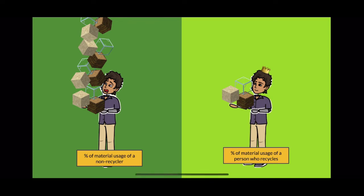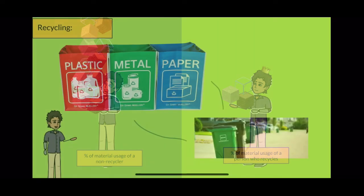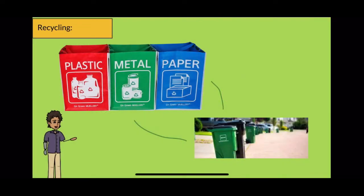When we recycle, we are reducing the amount of raw materials we require. Using recycled material and limiting our usage of raw resources is a great way to reduce the effects of deforestation. By putting material waste in the right bins, we can restore the negative effects we have on the environment.